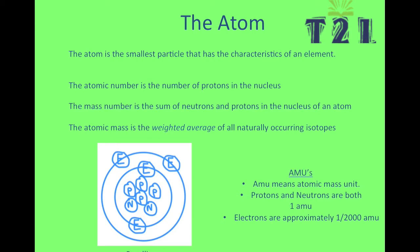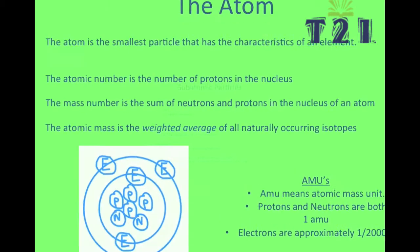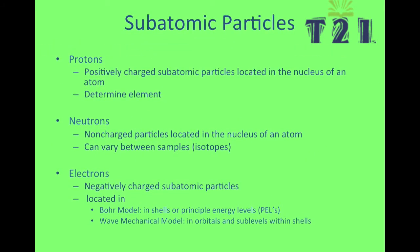The mass number is the sum of neutrons and protons in the nucleus of an atom. And the atomic mass is the weighted average of all naturally occurring isotopes. We'll get to that later. AMUs are atomic mass units.